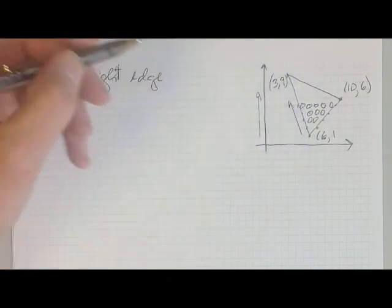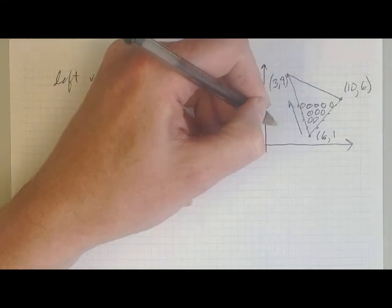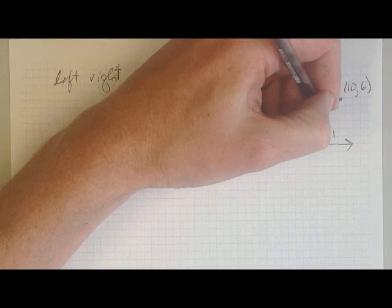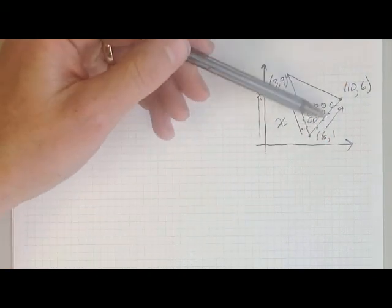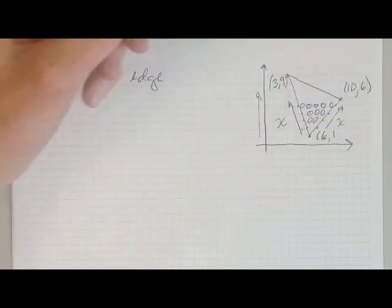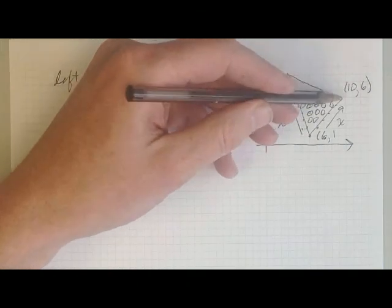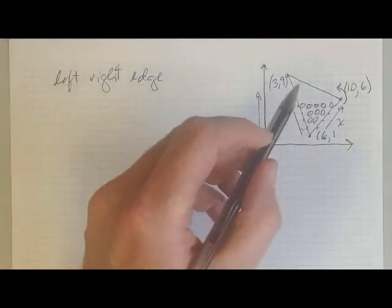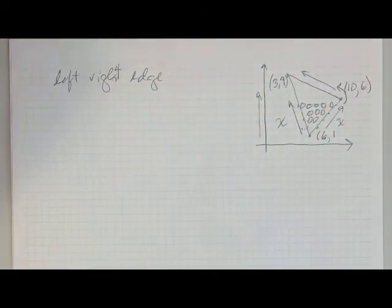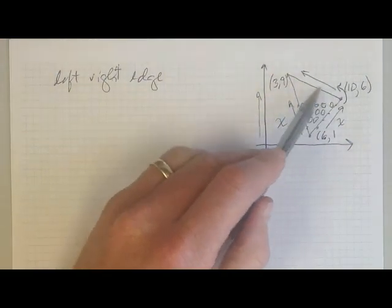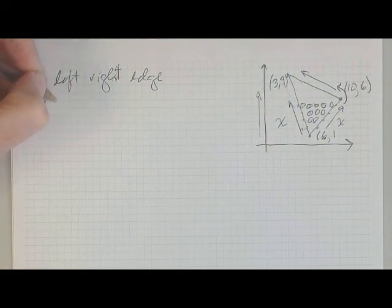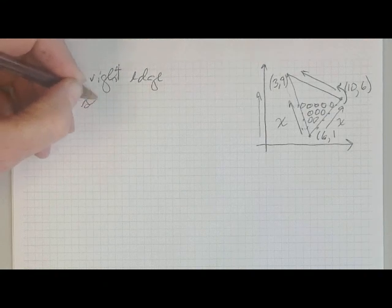As I move up the scan line on the left, I'm interpolating the x value to keep track of where the left edge of the triangle is. And as I'm moving up the triangle on the right, I need to keep track of the x value on the right edge to track the right edge of the triangle. Then I need to figure out when I cross over the midpoint and track the right edge above the midpoint on that side of the triangle. So I need to keep track of the left and the right edge, and I need to know when I've crossed the midpoint.